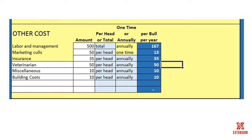Other costs are expenses related to having those bulls. Labor and management — for our herd we're going to expect to spend around $500 for the three bulls per year. Marketing culls: when those bulls reach the end of their productive life, we plan to take them to the sale barn, so hauling expense, sale barn commission, and brand inspection are prorated over the life of the bull each year. Insurance for death loss may also be included, along with other expenses such as veterinarian expense and miscellaneous building costs.